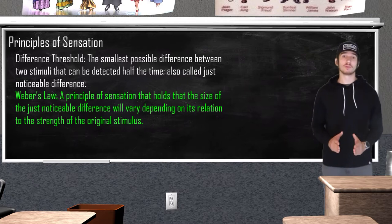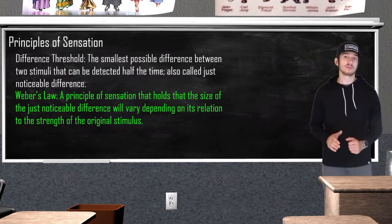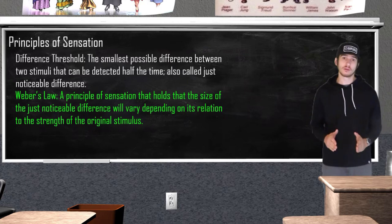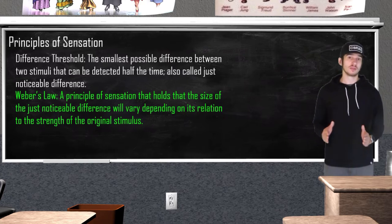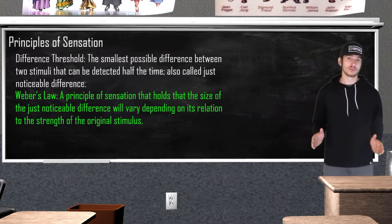This is because the size of the just noticeable difference will always vary depending on its relationship to the original stimulus. This is known as Weber's Law. Another way of looking at this could be a musician having to fine-tune their instrument to the exact specification to produce a certain sound.